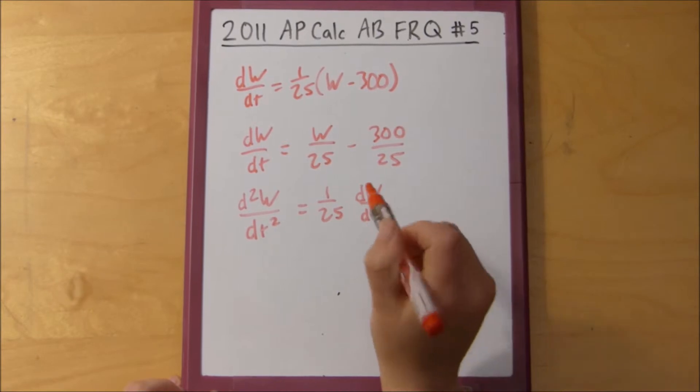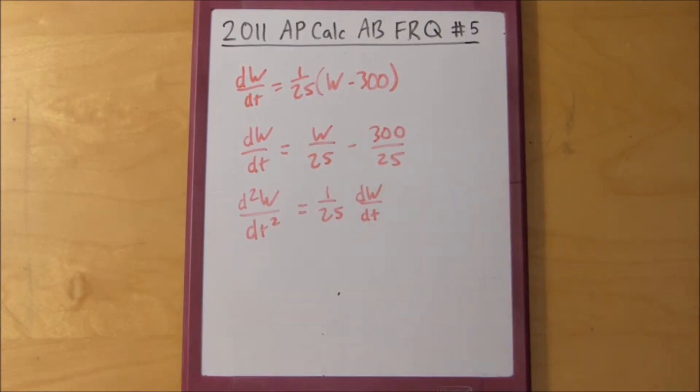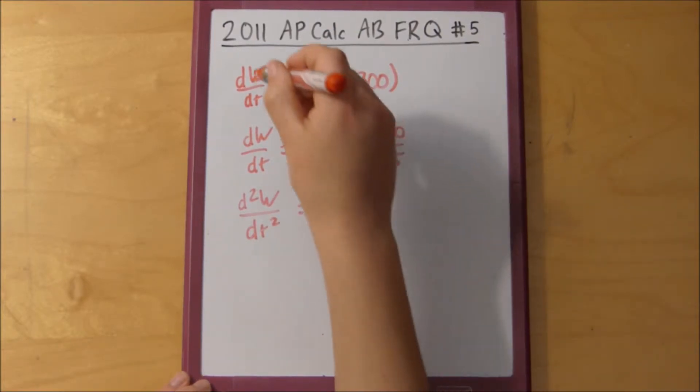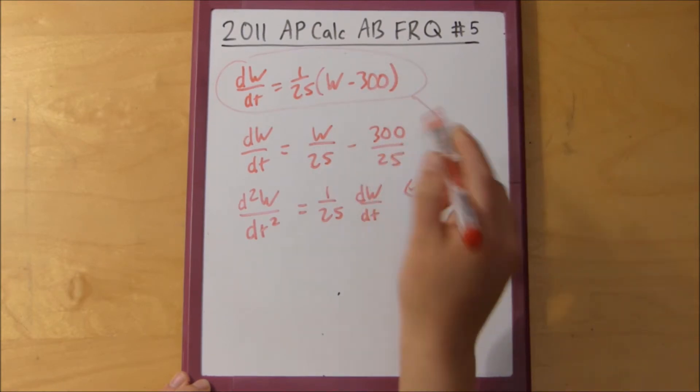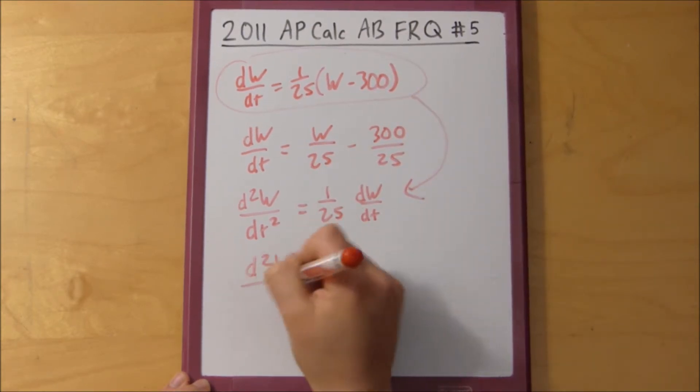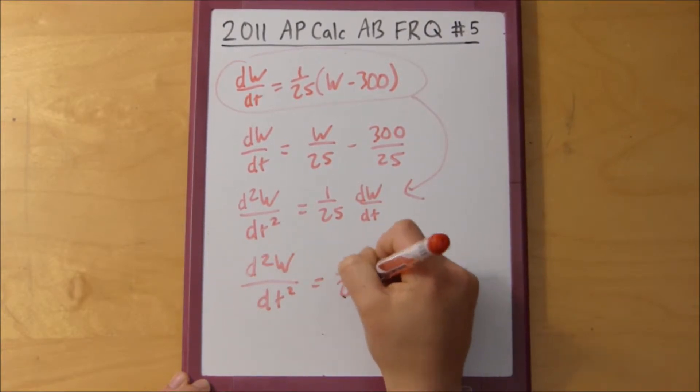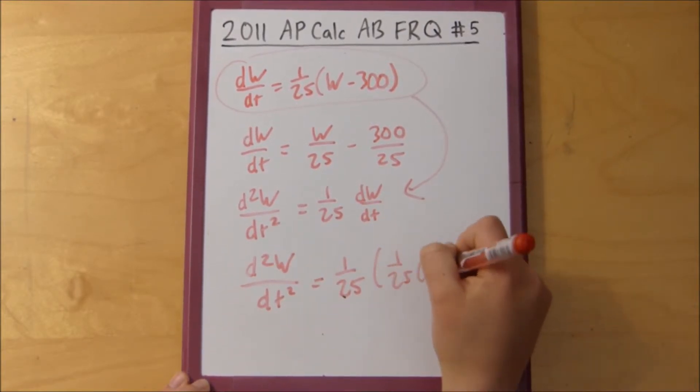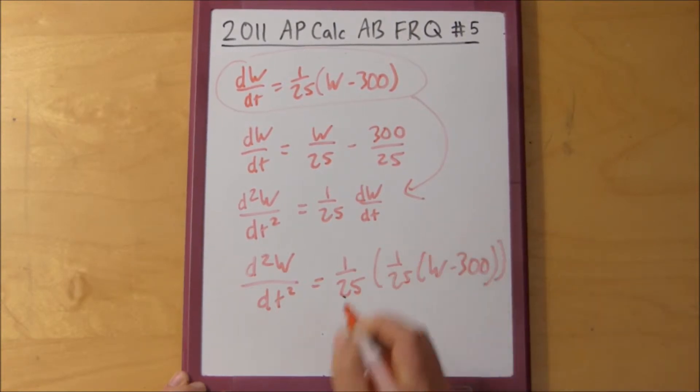So because we know what dw over dt is and because the problem asked us to write this second derivative in terms of w, we can just take this and plug it in to dw/dt, so equals 1 over 25 of 1/25 times w minus 300 and then we can just multiply these two together to get that the second derivative is 1 over 625 times w minus 300. This pen is really running out, so I'm going to switch it up for blue or green, green's better.